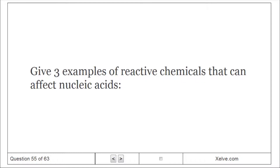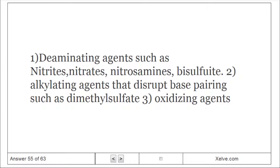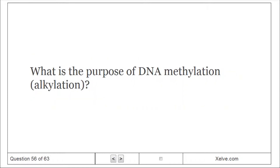Give three examples of reactive chemicals that can affect nucleic acids: (1) deaminating agents such as nitrites, nitrates, nitrous amines, and bisulfite; (2) alkylating agents that disrupt base pairing, such as dimethyl sulfate; (3) oxidizing agents.